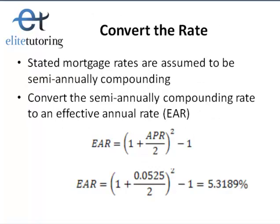Converting the rate: before we start, remember that mortgage rates are given or stated as an annual percentage rate, or APR, with semi-annual compounding — this is always assumed. Our first step is to calculate the mortgage payment, but to do that we need to convert the given rate, which is semi-annually compounding, first to an annually compounding rate called the effective annual rate, and then convert that into a monthly rate. Typically we see monthly or even more frequent payments such as bi-weekly or weekly, but the mortgage rate stated is always semi-annually compounding.